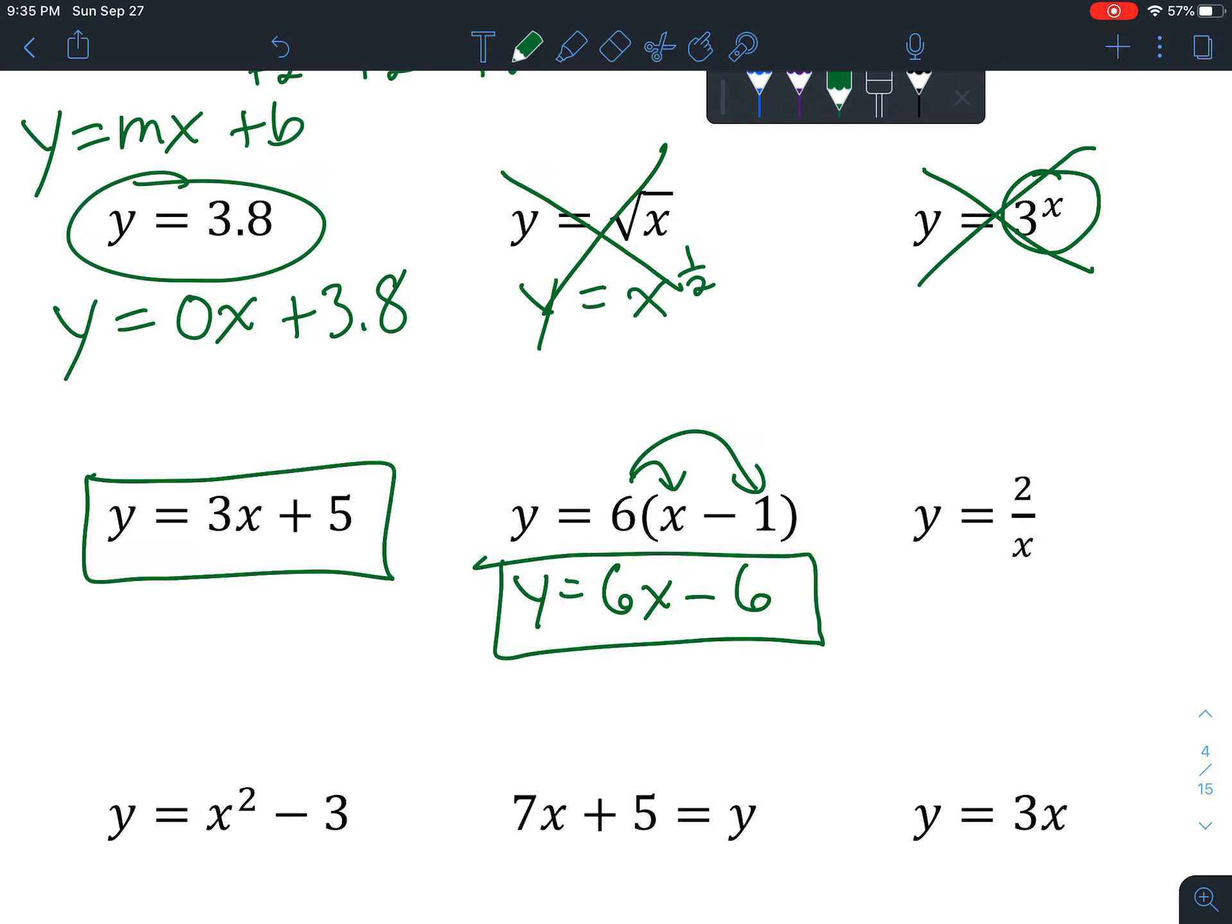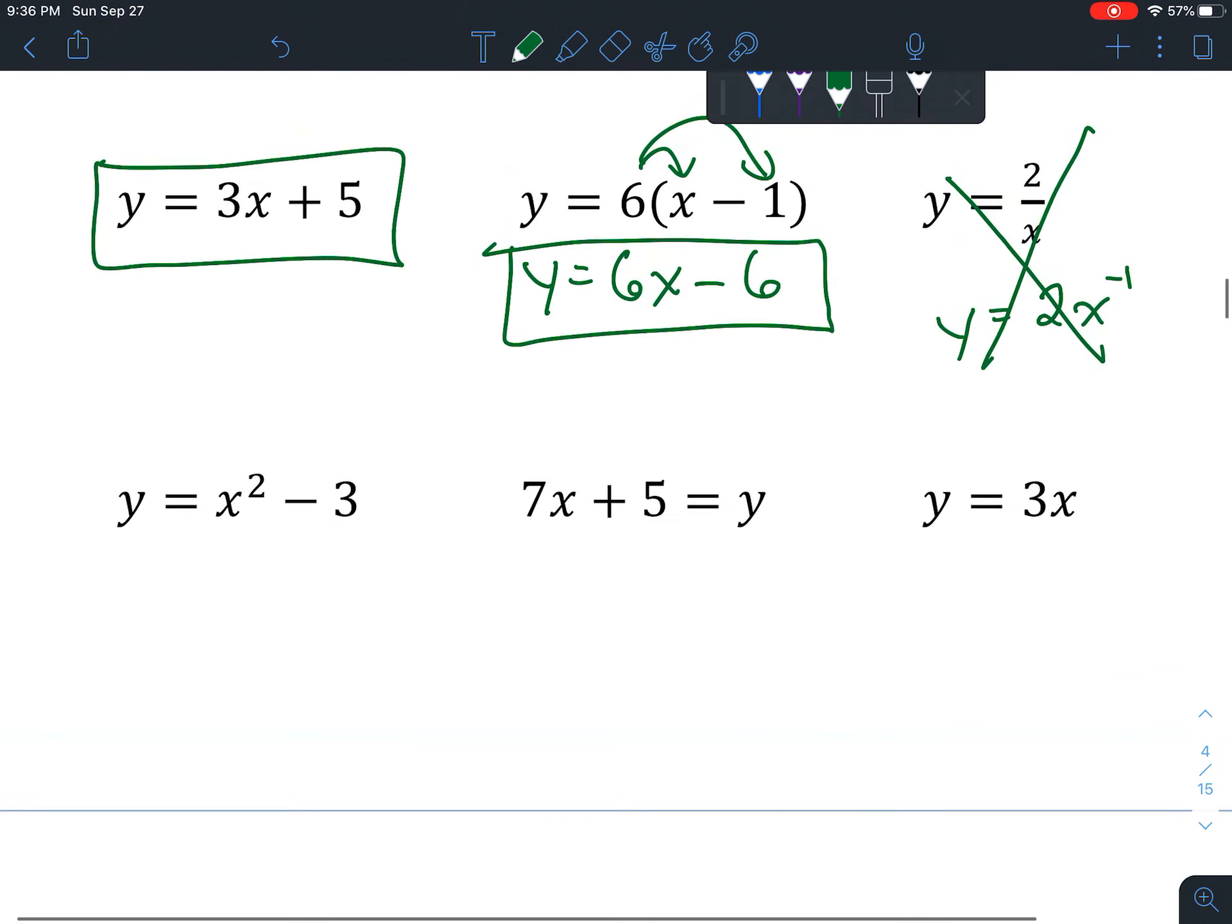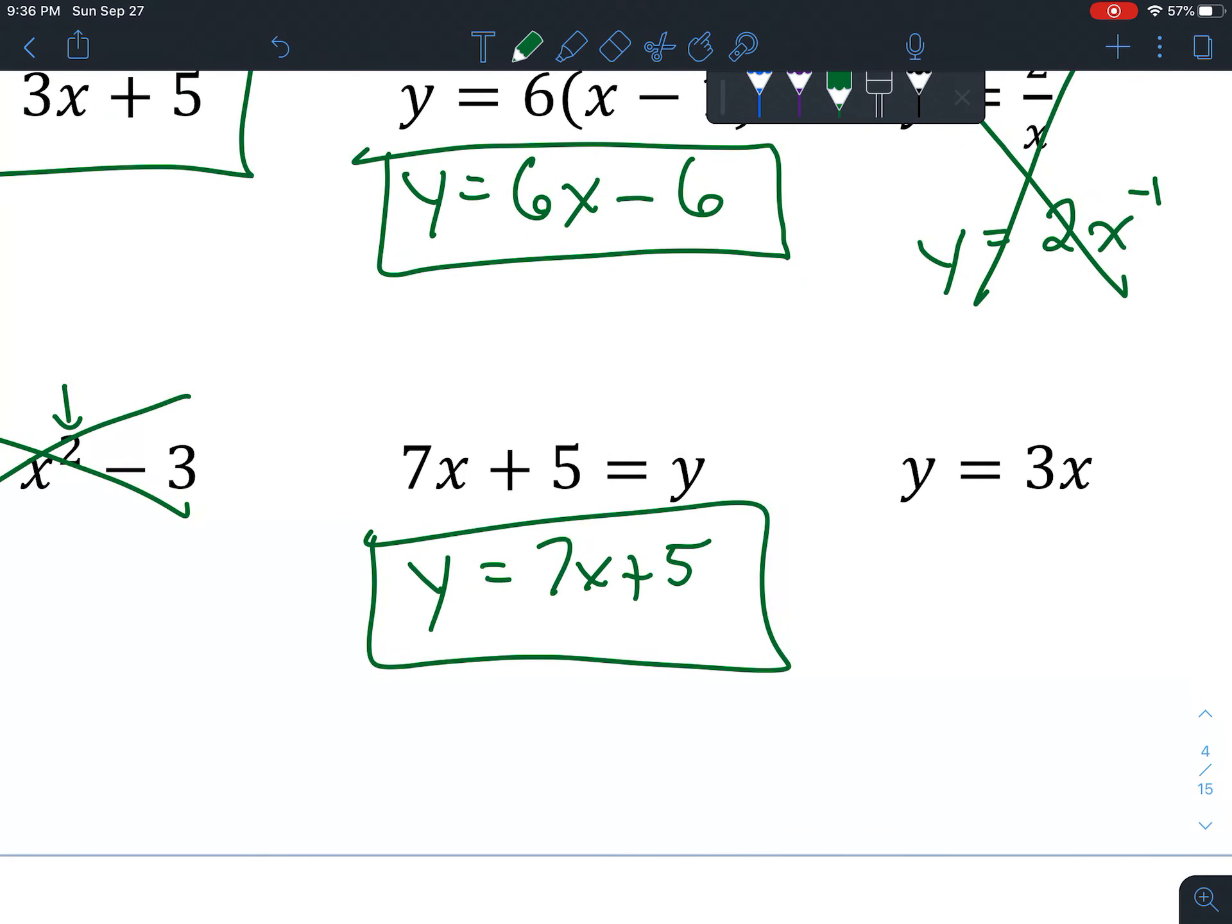2 over x - this is the same as 2 times x to the negative 1. Remember I said that if you have a funny power then it's not a linear function. Once again, a power - no, that is not a linear function. Let's switch this around, see if it will work. You could put the y on this side and the 7x plus 5 on this side, and it's a linear function. Y equals 3x - you might say it's missing the plus, but you could add a zero and it doesn't change anything, so this one is also a function.